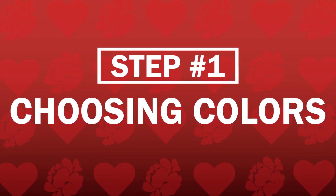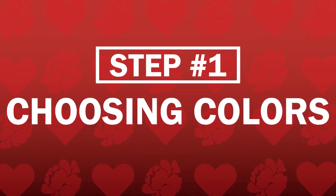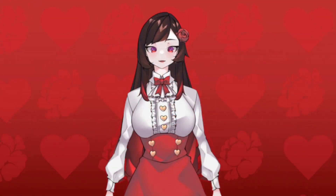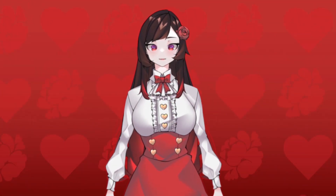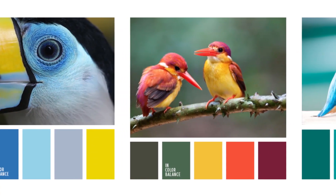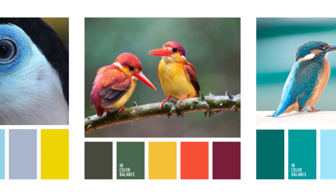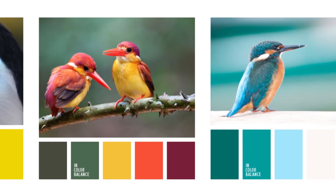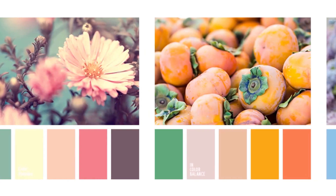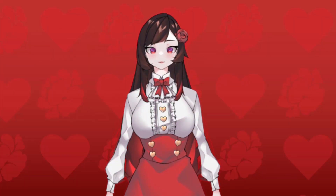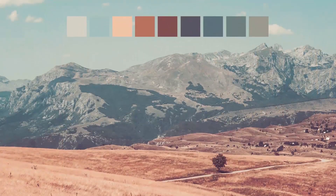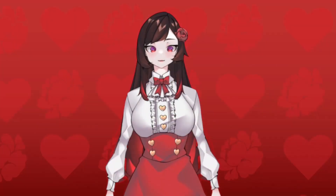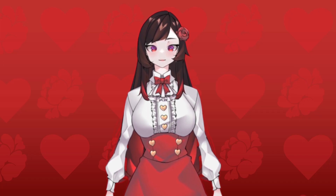Step number one is picking your colors. There are several ways to pick colors for your design. First, you can pick colors that naturally exist within nature. There are various shades of colors on animals and flora, and multiple colors across the scenery, whether it's man-made or natural. You can pick and choose colors to make your own personalized palette.